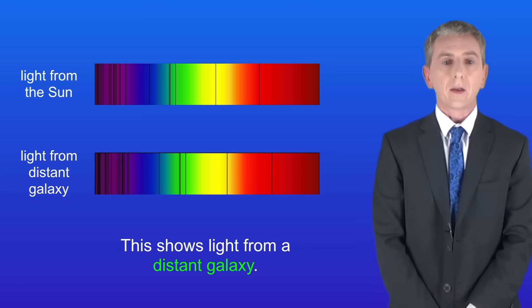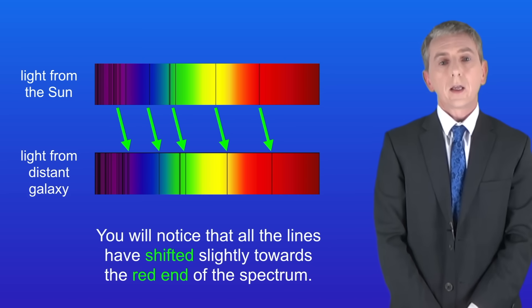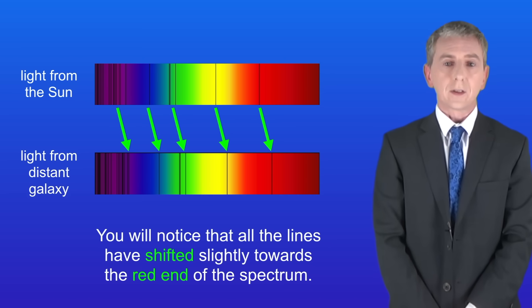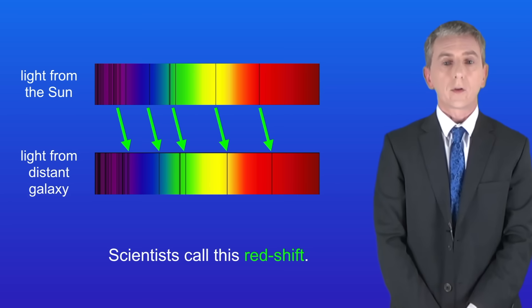I'm showing you here the light from a distant galaxy. You'll notice that all the lines have shifted slightly towards the red end of the spectrum. Scientists call this redshift.